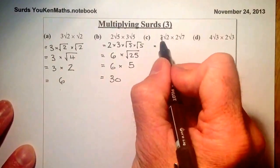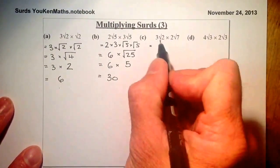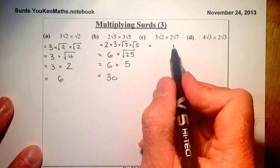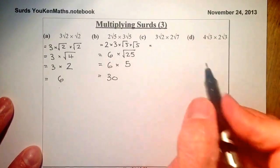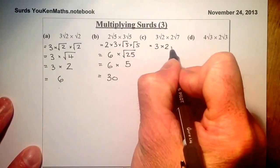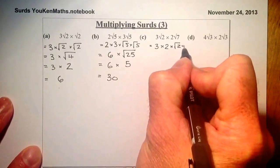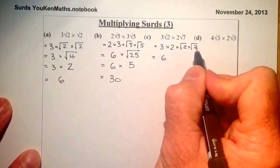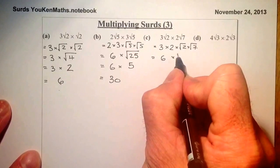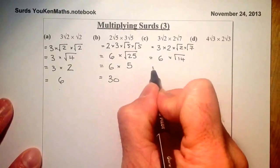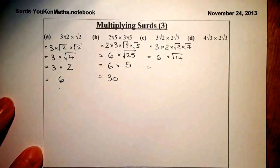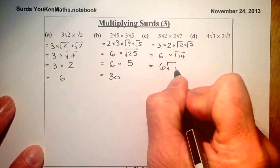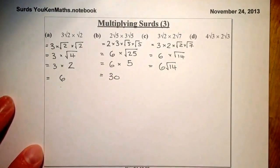The way I would do this one is 3 times 2 gives me 6, so I'd write the 6 down and have root 14 after that — that's root 2 times root 7. So: 3 times 2 times root 2 times root 7. Gathering it all up, 3 times 2 is 6, and root 2 times root 7 gives me root 14. I can't simplify root 14 down from the square numbers I know, so the final answer is 6 root 14.